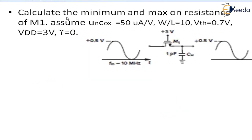We need to calculate the minimum and maximum ON resistance of M1. The given parameters are: mu times Cox = 50 microampere per volt squared, W/L ratio = 10, VTH = 0.7V, VDD = 3V, and channel length modulation is to be neglected. The input signal VIN has a maximum value of 0.5V and a minimum of -0.5V, with a frequency of 10 megahertz. VG is given as 3 volts, and the capacitor value is 10 picofarad. The output will track the input signal and repeat the same.